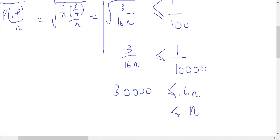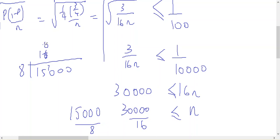n should be bigger than or equal to 30,000 divided by 16, which is 15,000 divided by 8. 8 into 15,000: 8 goes into 15 once with 7 over; 8 goes into 70 eight times... Working through the division: 1,875. n is going to be bigger than or equal to 1,875.